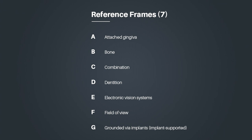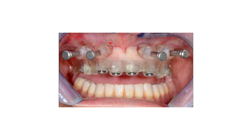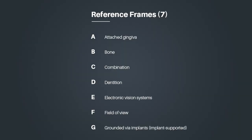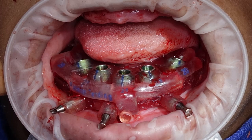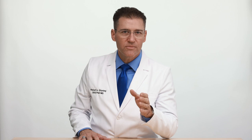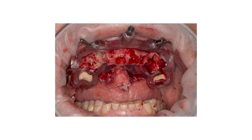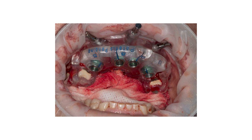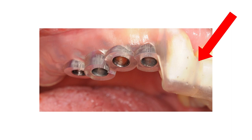First, we have type A: attached gingiva. This is your reference frame for a patient who is dentureless — anyone who's in a denture. You don't have many options other than sitting the guide on the attached gingiva. This guide goes right over the ridge like a denture and gets pinned in place. Next comes type B for bone-level guides. The bone foundation guide is fixed to the bone and the surgical guide gets attached to the top of that. Type C means combination. Your guide can sit on a combination of teeth and gums, teeth and bone, or any other combination of reference frames. Our guide sits on a couple of teeth in the back and the bone in the front, making this a combination guide. Here's another combination guide, this one with teeth in the front and soft tissue in the back.